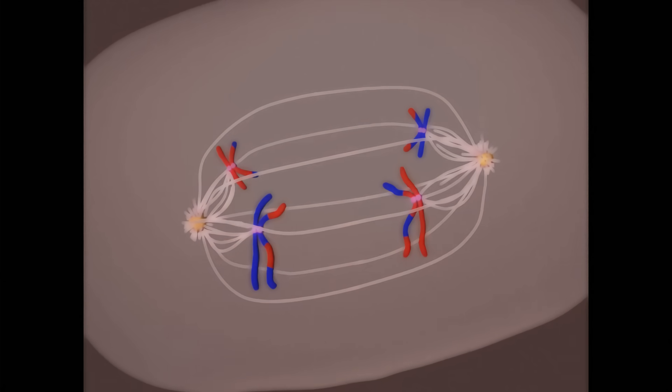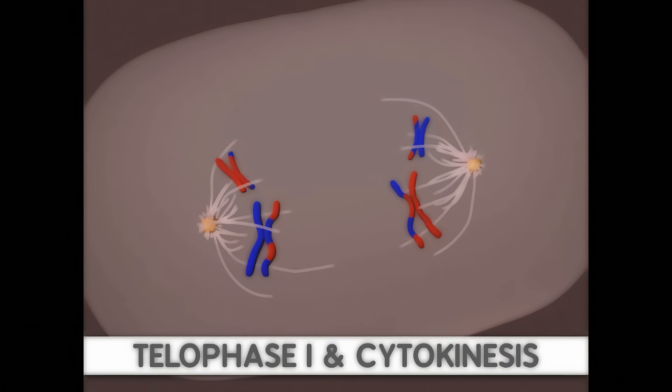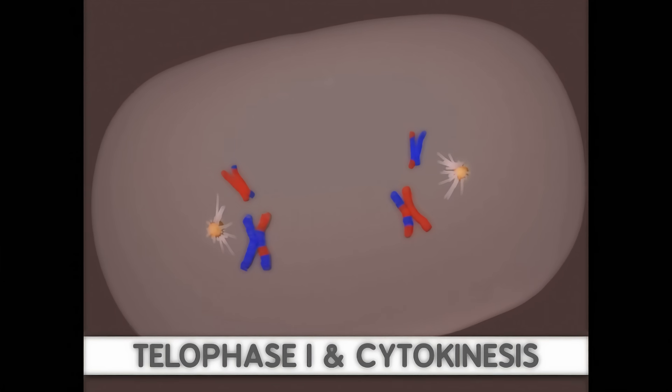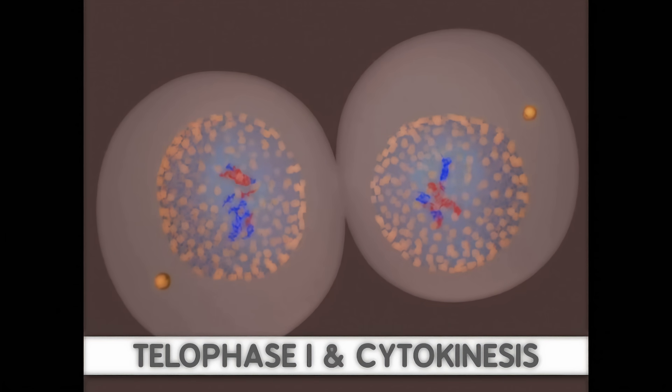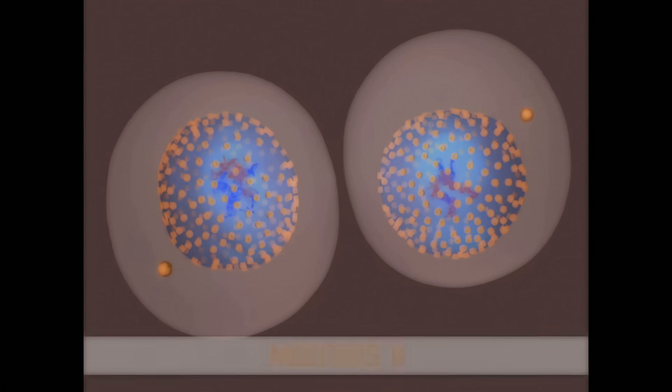The final steps of meiosis I are telophase I and cytokinesis. Here, the cell divides into two daughter cells. Each of these two cells now undergo meiosis II.